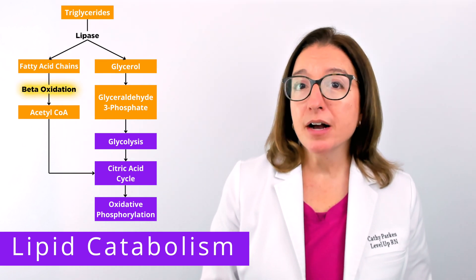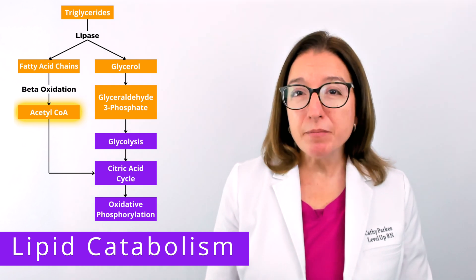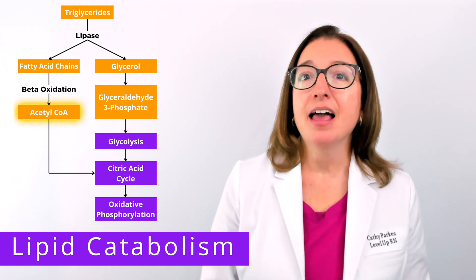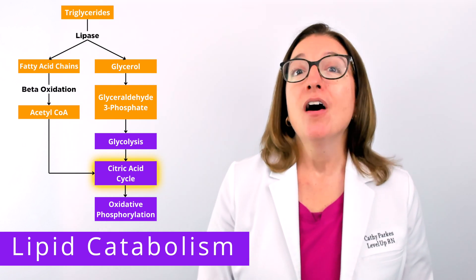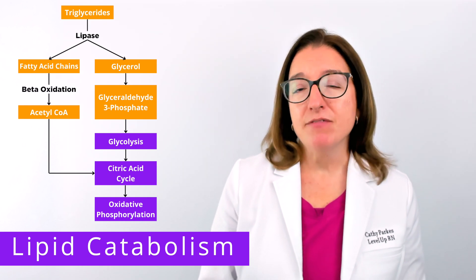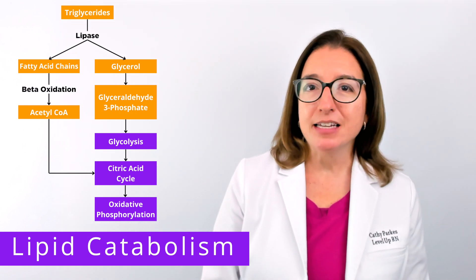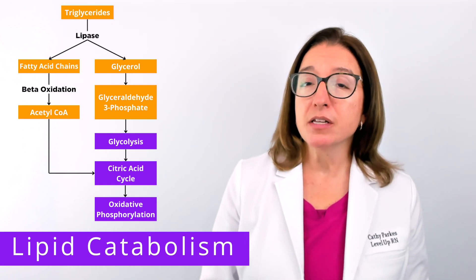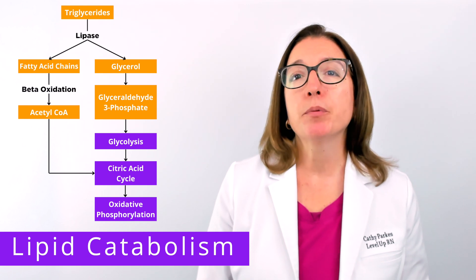The fatty acid chains are broken down in a process called beta-oxidation. During this process, two-carbon acetyl groups, as well as coenzyme A, are removed from the end of the fatty acid chain, and then that molecule can enter the citric acid cycle. Also during beta-oxidation, NAD+ and FAD are reduced to NADH and FADH2, and then those molecules can bring their electrons to the electron transport chain to help produce ATP.